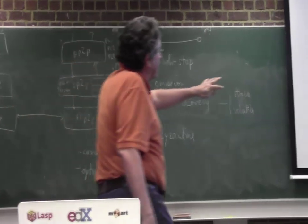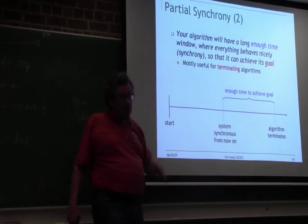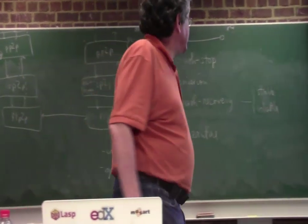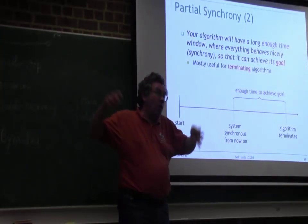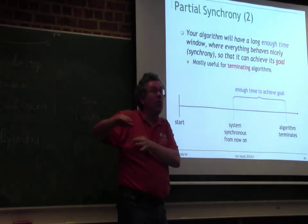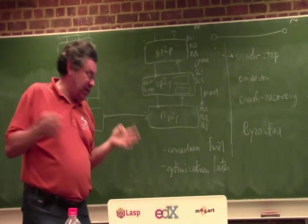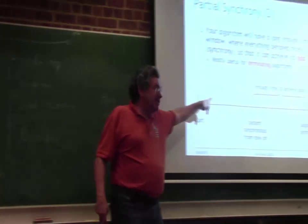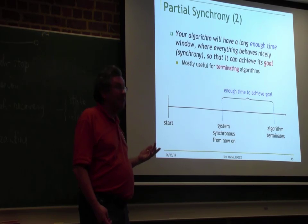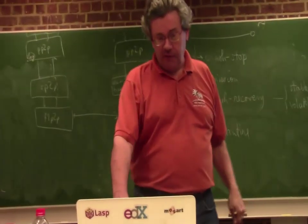It turns out partial synchrony is a very nice model. Some algorithms are very interesting because you can define them in a partially synchronous model even if you cannot define them in a purely asynchronous model — so this is a strictly better model. If you want an algorithm that runs on the whole internet, it has to work on this model. If your algorithm runs just inside a building on a local area network, maybe you can assume it's synchronous. But if you have a synchronous algorithm and try to run it on a partially synchronous system, sometimes it won't work — it won't terminate or give correct results.